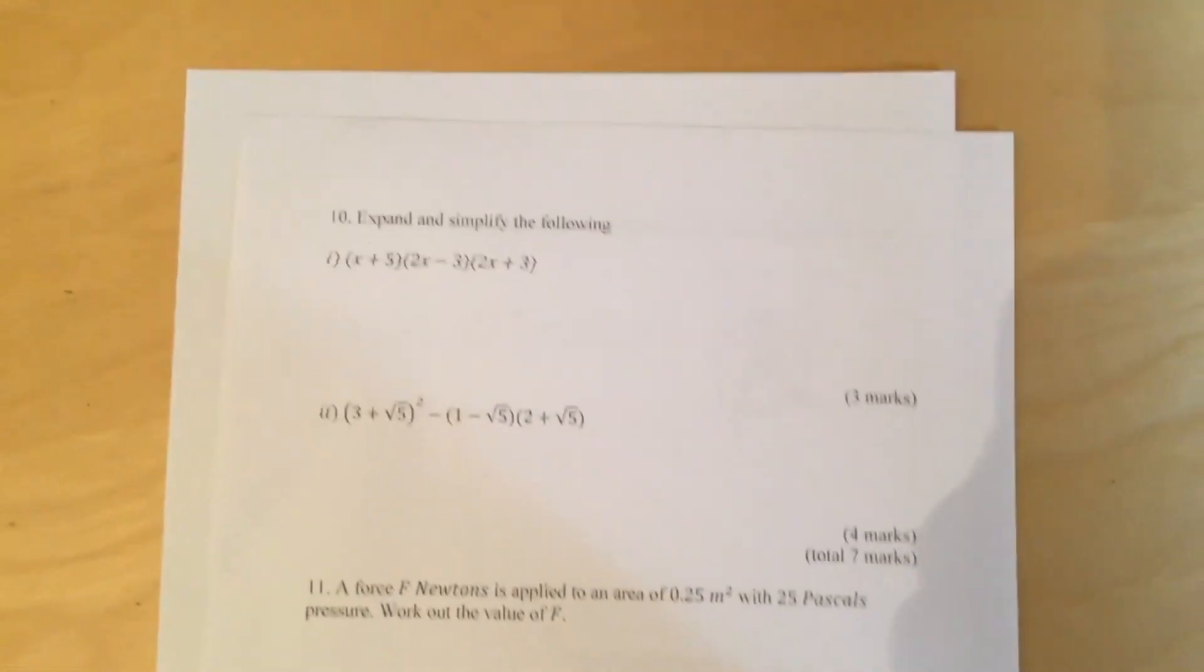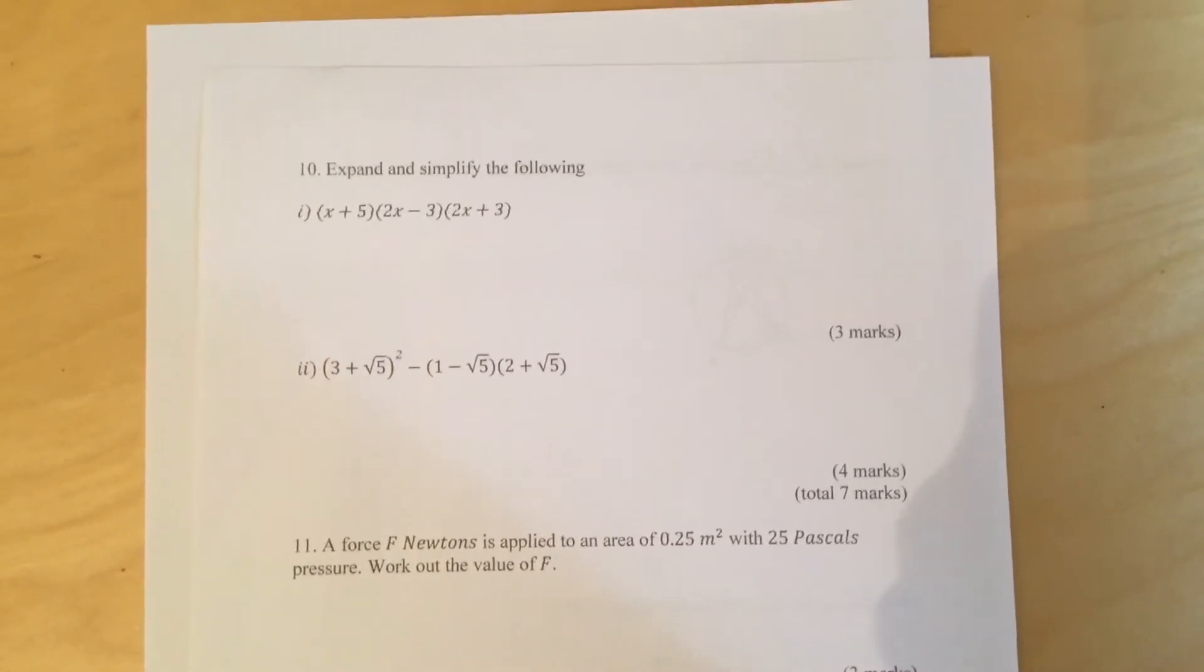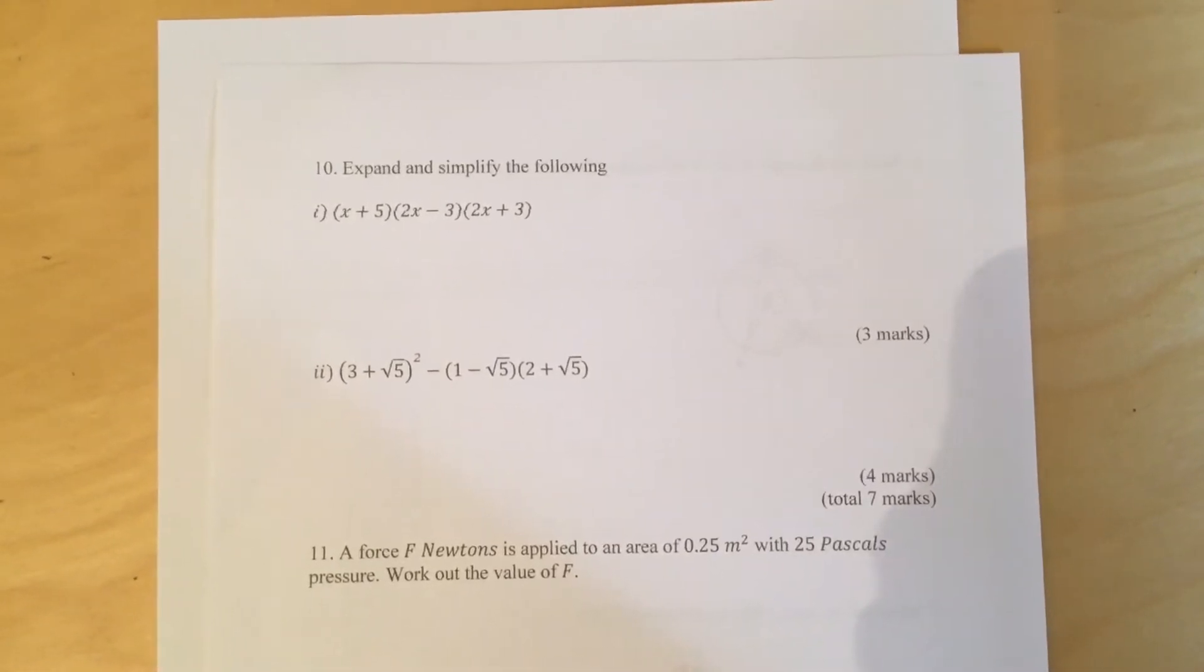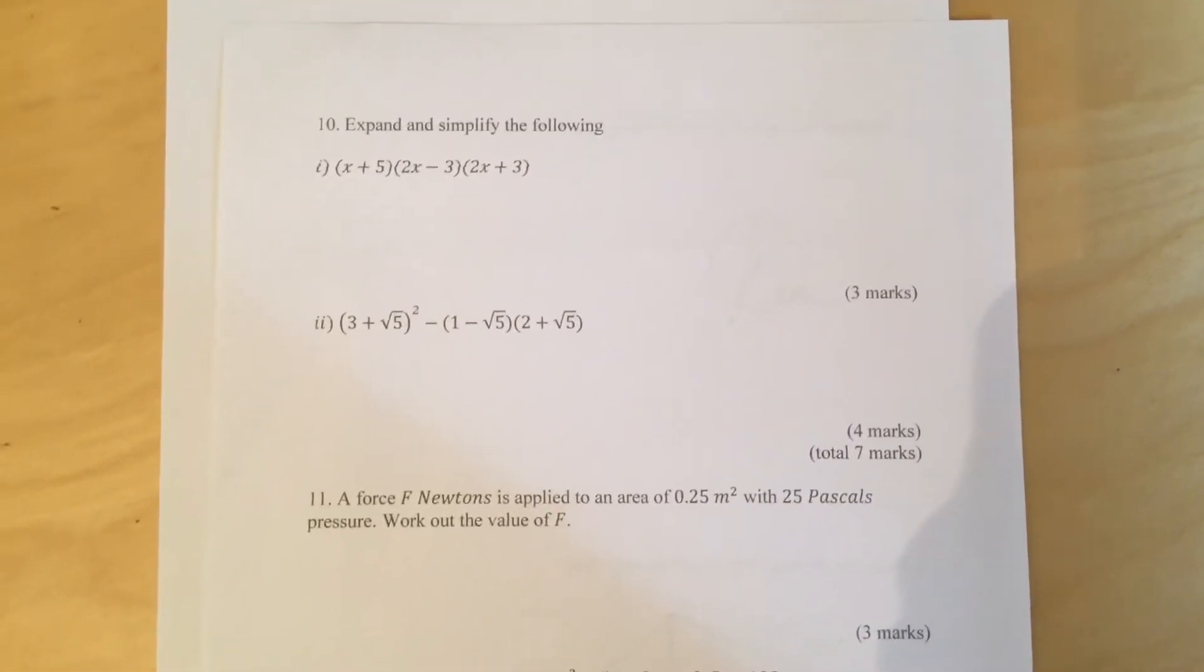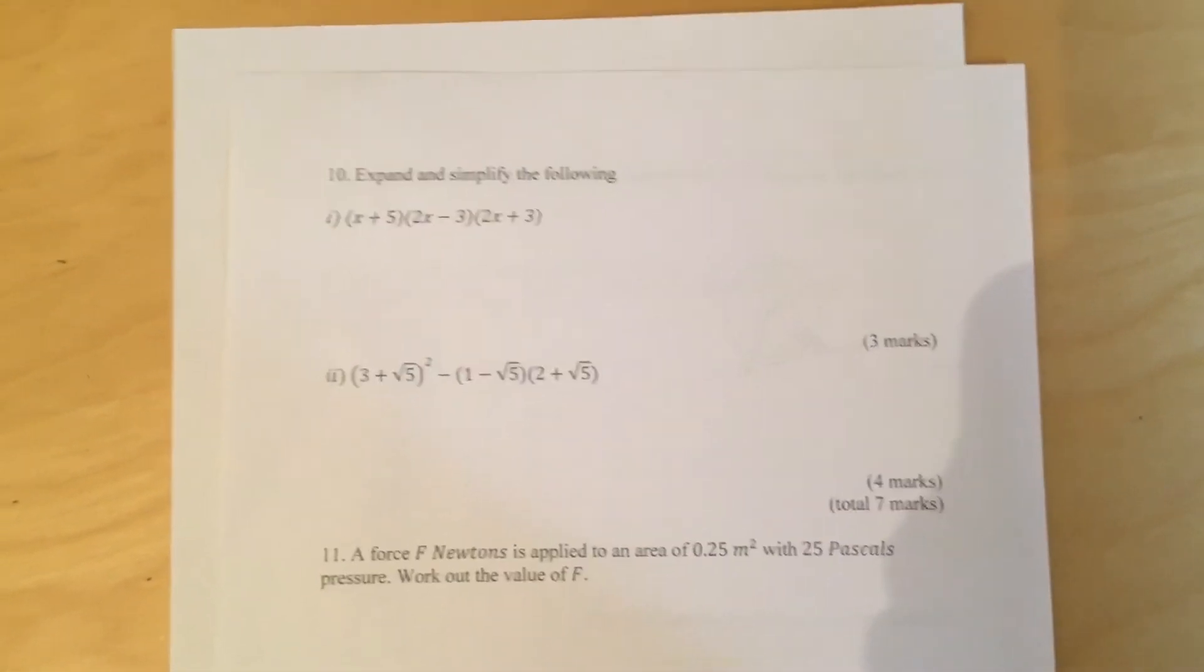Question 10. Expand and simplify the following. Part 1. X plus 5 times 2x minus 3 times 2x plus 3. Part 2. 3 plus root 5 squared minus 1 minus root 5 times 2 plus root 5.